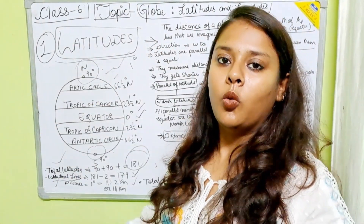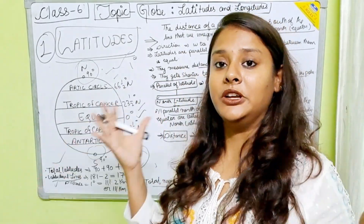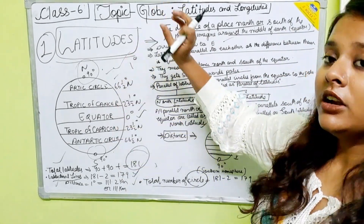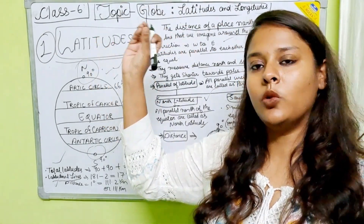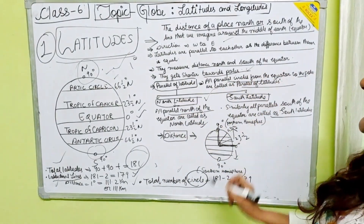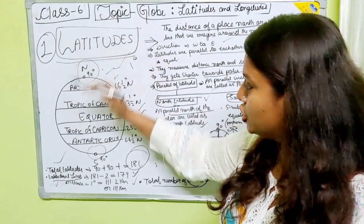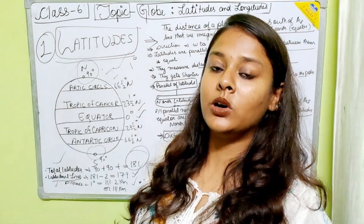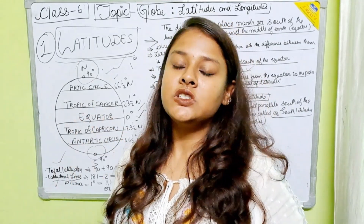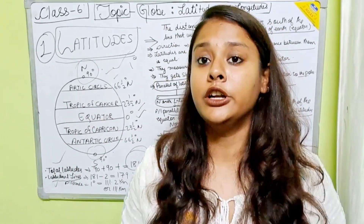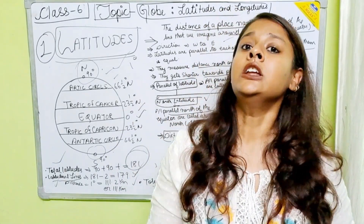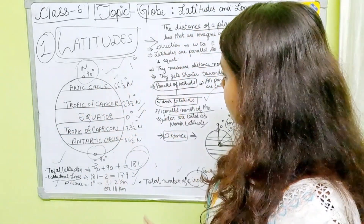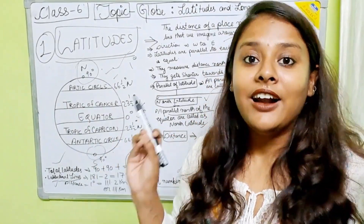Latitudes are the horizontal lines. They measure the distance between the north and the south. They are parallel to each other because they have equal distance of 1 degree. One degree equals 111 kilometers. As latitudes move towards the pole, they get shorter. Total latitudes present: 181. Total latitudinal lines: 179. Total number of circles: 179. It is very important — you should remember how many latitudes are present.